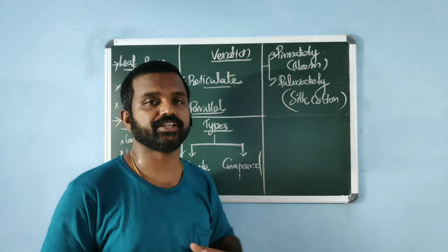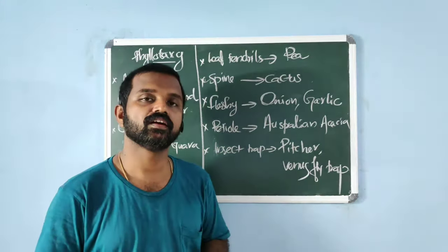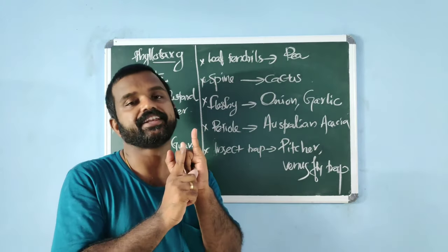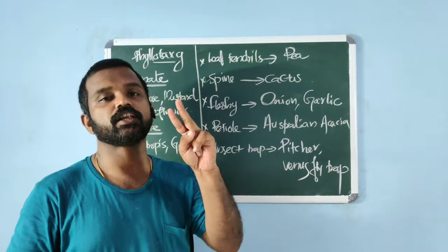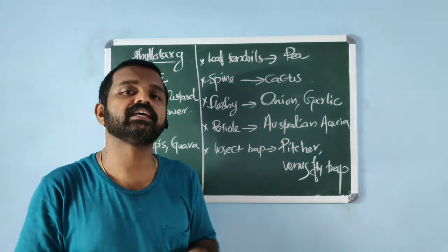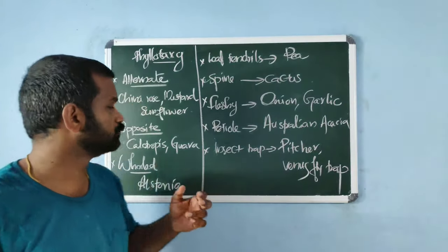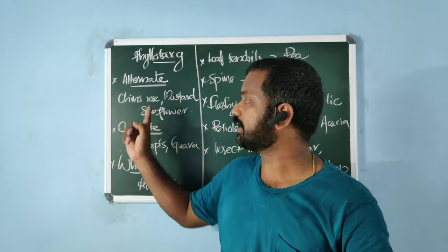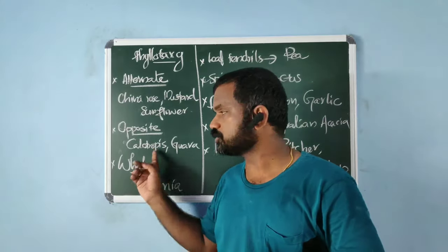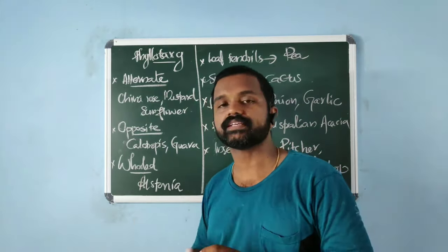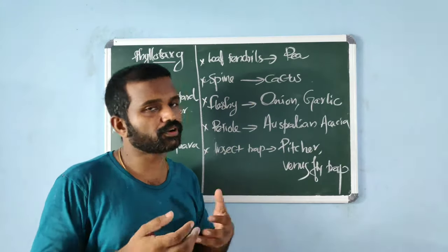Phyllotaxy is the arrangement of leaves on the stem. If a single leaf at a node is arranged alternately, it is alternate phyllotaxy. If two leaves at a node are arranged opposite to each other, it is opposite phyllotaxy. If more than two leaves at a node are arranged in a whorl (circular manner), it is whorled phyllotaxy. Examples — alternate: China rose, mustard, sunflower; opposite: Calotropis and guava; whorled: Alstonia.